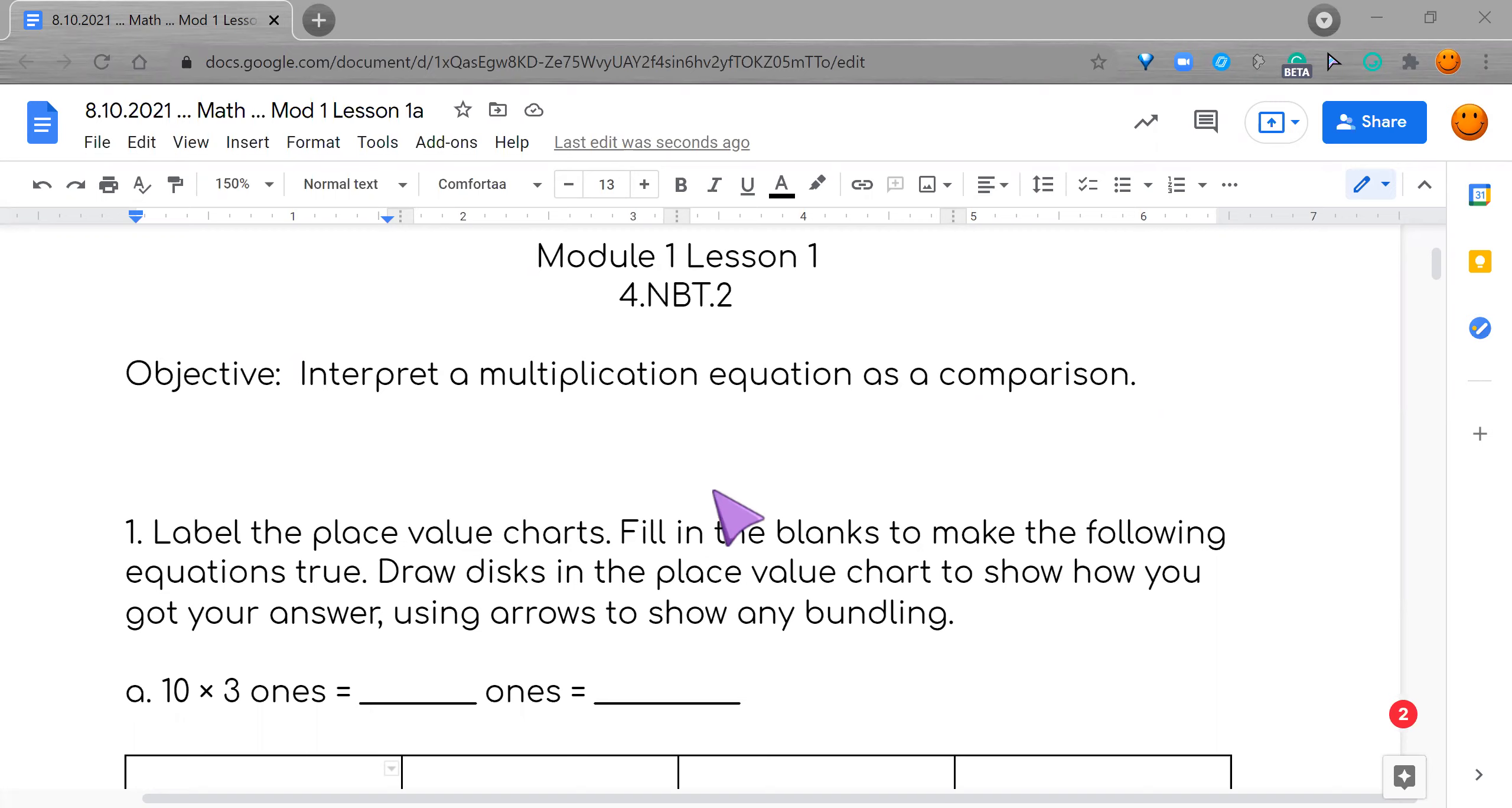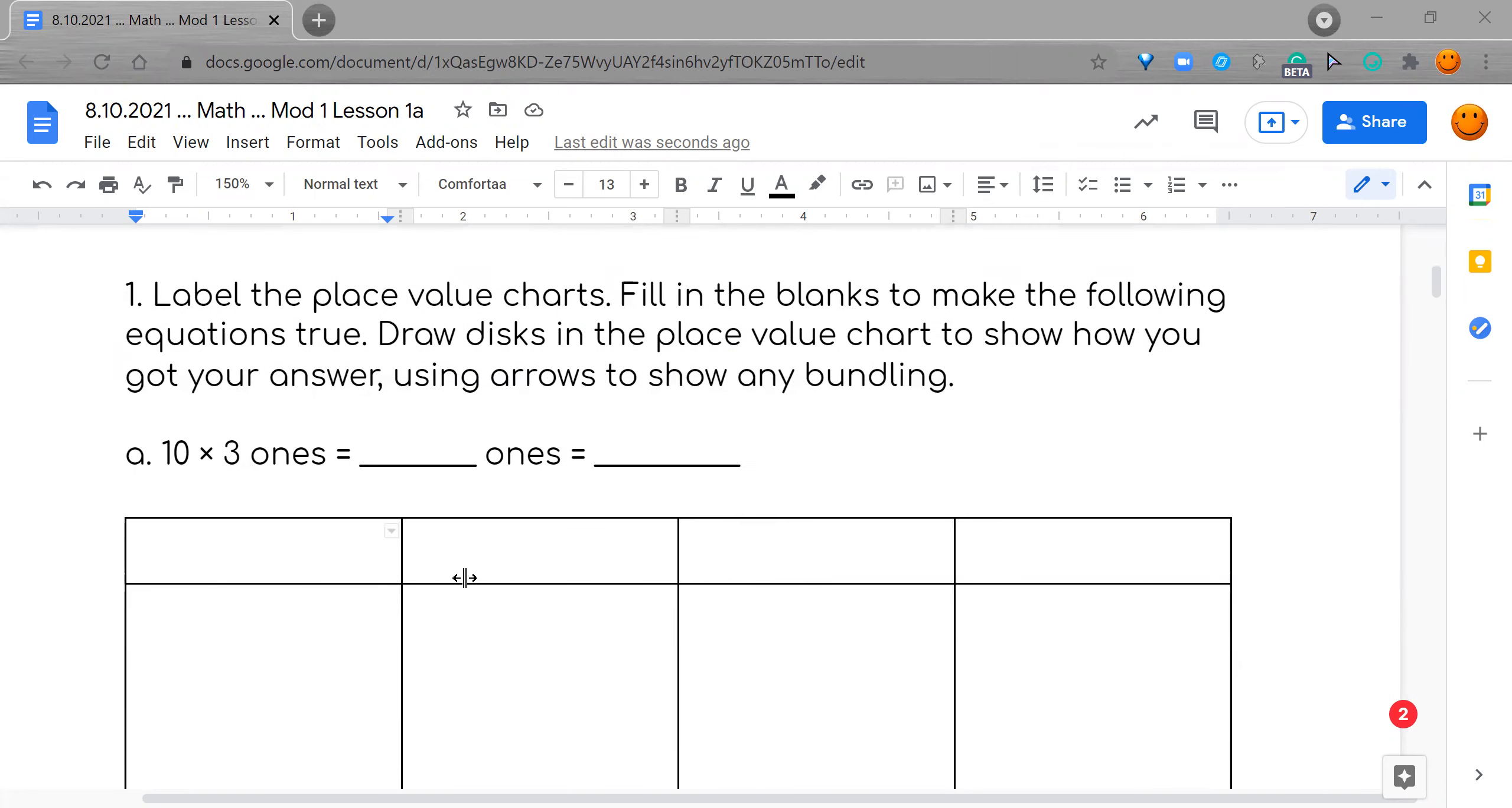So let's go read the directions for number one. It says label the place value charts. So first, we know what to do. We need to start at the right corner, right side, and start off with ones. Then, yes you guys, tens. Then, hundreds. And what's the last one? Thousands.